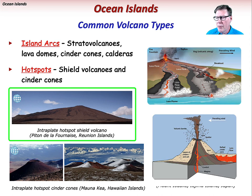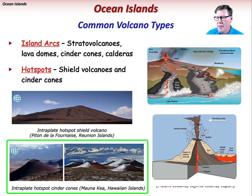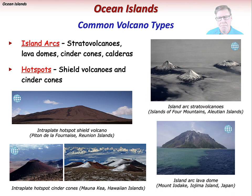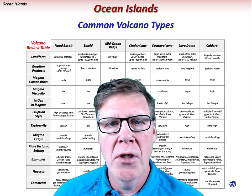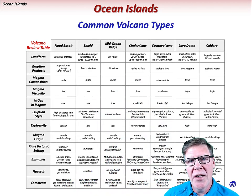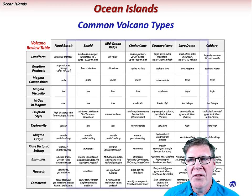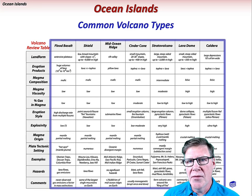Piton de la Fournay is a shield volcano on Reunion Island in the Indian Ocean. Mauna Kea, itself a large shield volcano, hosts numerous smaller cinder cones on its flanks. We can always reference the Volcano Review Table for details about the characteristics of the main volcano types, all of which can be found in Earth's ocean basins.